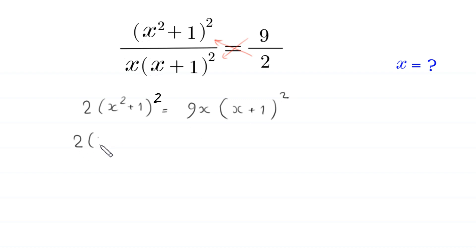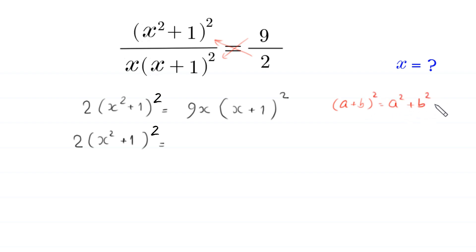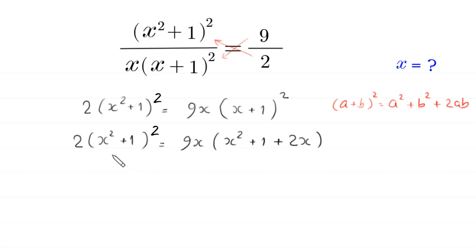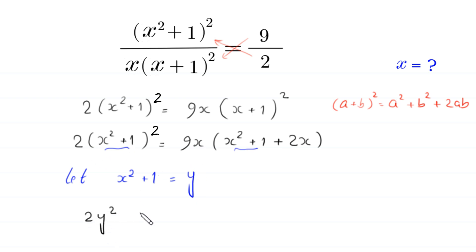Next, 2 times (x² + 1)² is equal to... By using the algebraic identity A plus B whole squared equals A² plus B² plus 2AB, this will become 9x times (x² + 1 + 2x). Now we suppose that x² + 1 equals y.